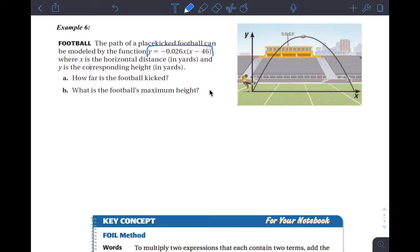If we go here, you look at the type of function they gave you and you need to recognize the form. Before we do that, let's just read the prompt. It says the path of a place-kicked football can be modeled by the function y equals negative 0.026x times (x minus 46) where x is the horizontal distance, that would be this right here in yards, and y is the corresponding height in yards.